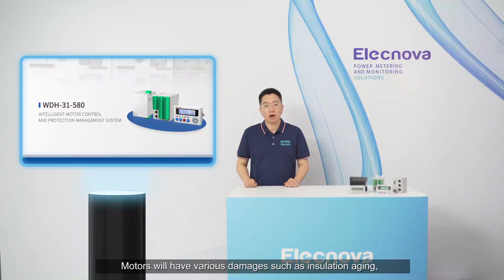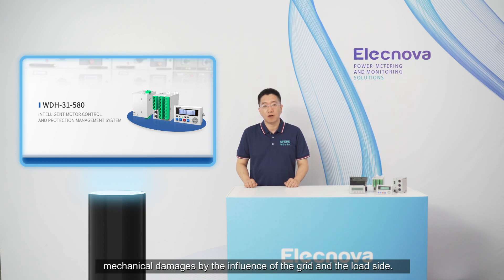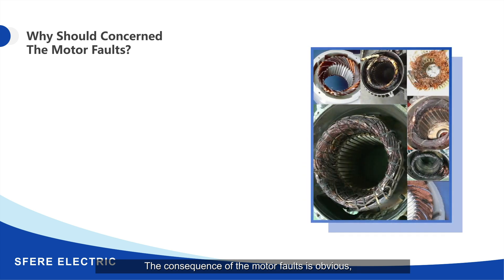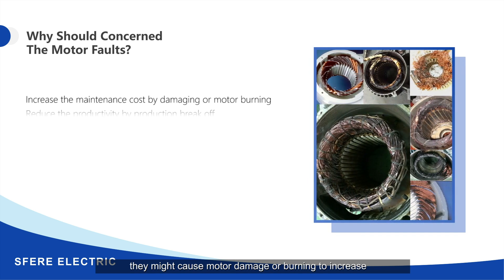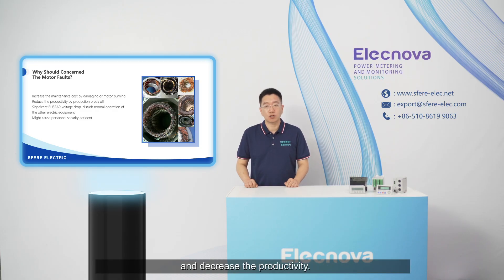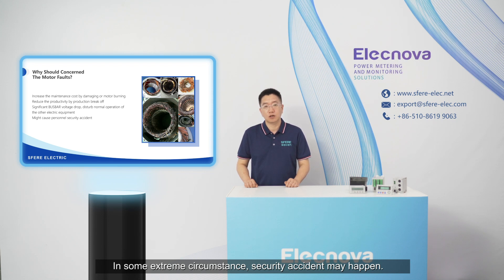Motors can suffer various damages such as insulation degradation and mechanical damage due to the influence of the grid and load side. The consequences of motor faults are obvious — they might cause motor damage or burning, increase maintenance costs, cause production breakdowns, decrease productivity, and in extreme circumstances, security accidents may happen.